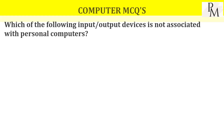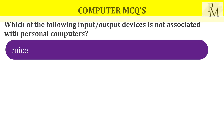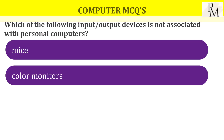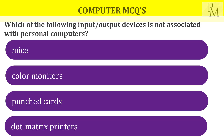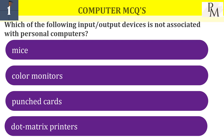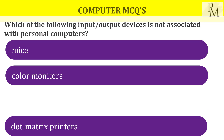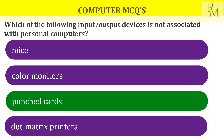Which of the following input/output devices is not associated with personal computers? Mic is associated, color monitors are associated, but punched cards are not associated with personal computers.